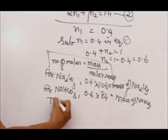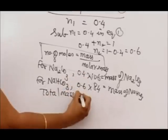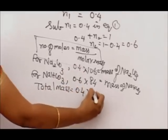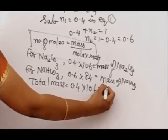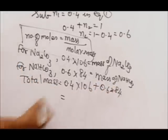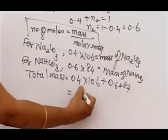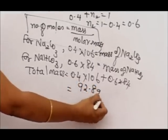Now we are going to find the total mass. Total mass equals this plus this: 0.4 times 106 plus 0.6 times 84. This is a very simple calculation. The answer is 92.8 grams.